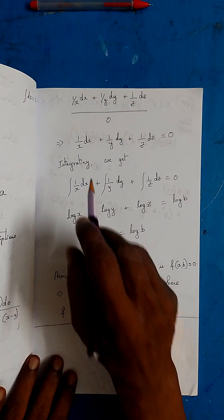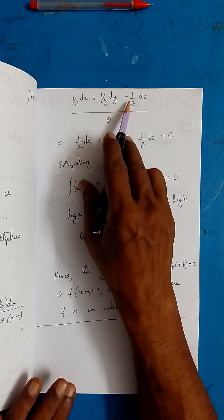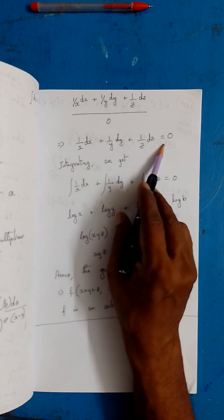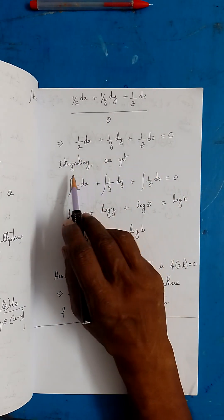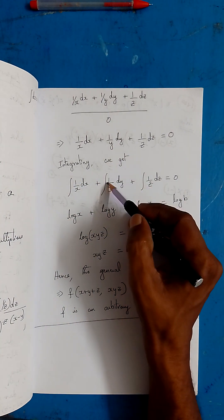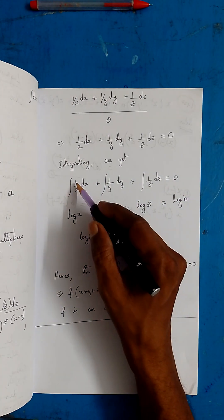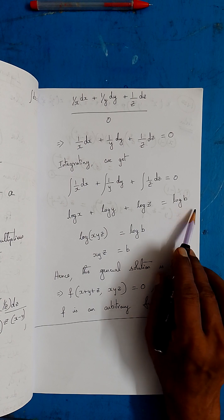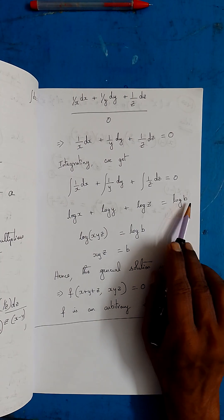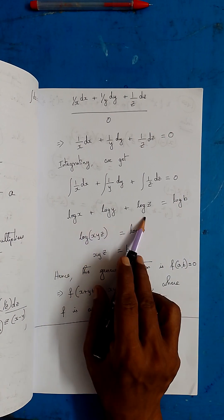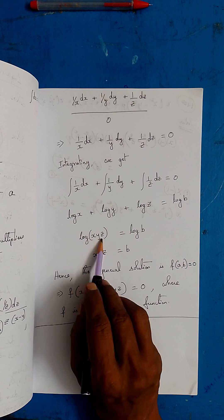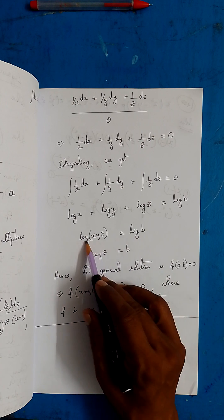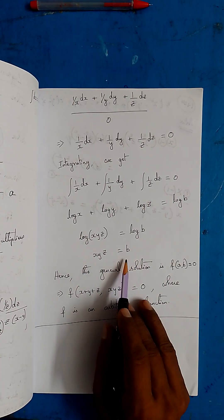So (1/x)dx + (1/y)dy + (1/z)dz = 0. Integrating: log x + log y + log z = log b, where log b is an arbitrary constant. By logarithmic rules, log(xyz) = log b, therefore xyz = b. This is the second part of the solution.